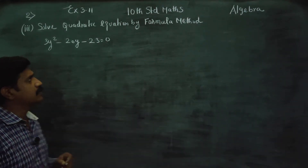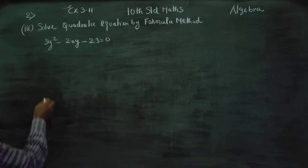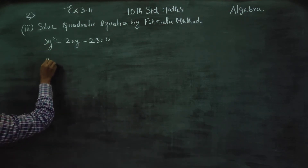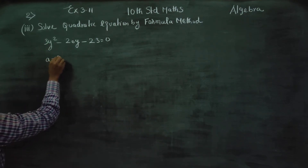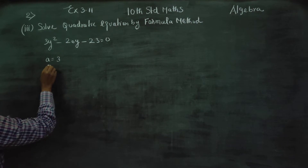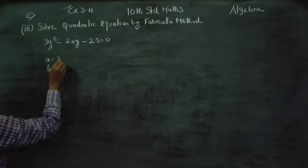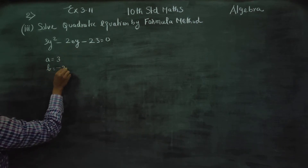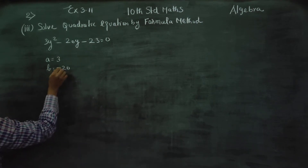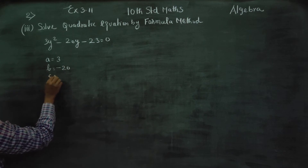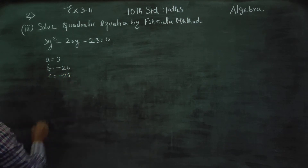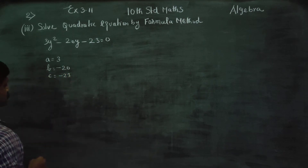For the formula method, first you have to identify A, B, and C. A is equal to 3, B is equal to minus 20, and C is equal to minus 23.